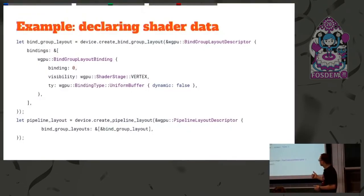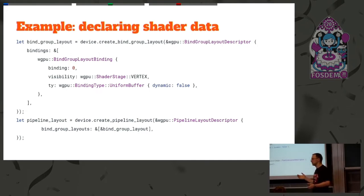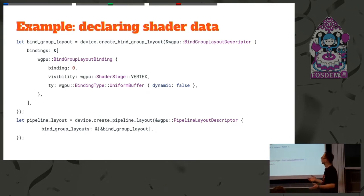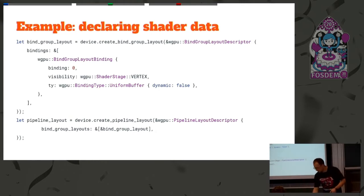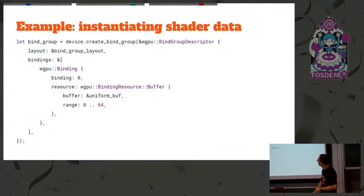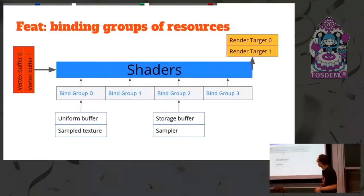We're separating data from the layout of the data. These are the bind groups — a descriptor set in Vulkan or a range of descriptors in D3D12, which holds a number of resources that you bind at once. That's why it's called a bind group. We create a bind group by providing the exact buffer we just created.